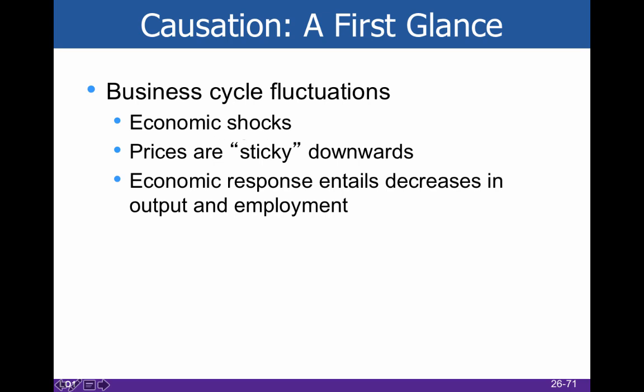Economic shocks are one explanation — basically a shock comes from anything that we don't anticipate, either a positive or negative shock to the demand side or the supply side. Another explanation is that prices are sticky downwards: prices willingly go up but they don't go down. So even when demand declines — when we go from D to D1 — if prices are sticky and we remain at P, then quantity falls significantly. Whereas if we have flexible prices, quantity would remain the same.